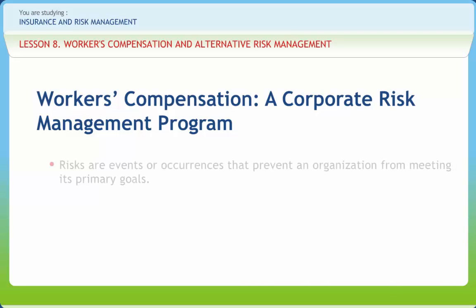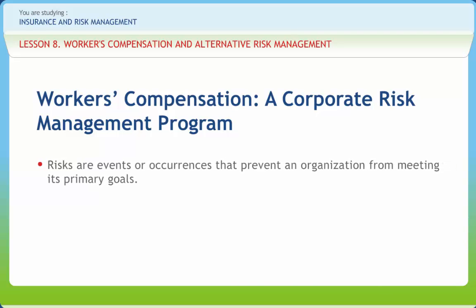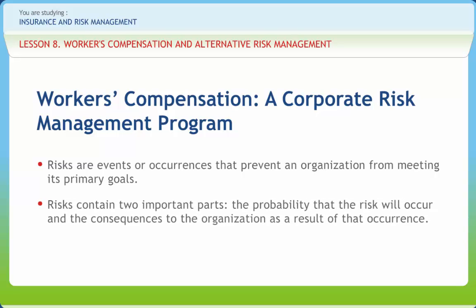Risk are events or occurrences that prevent an organization from meeting its primary goals. Risks contain two important parts: the probability that the risk will occur, and the consequences to the organization as a result of that occurrence. Risk Management involves the determination of these probabilities, the consequences of potential risk, and the identification of actions that can be taken to limit the possibilities and the degree of the consequences.